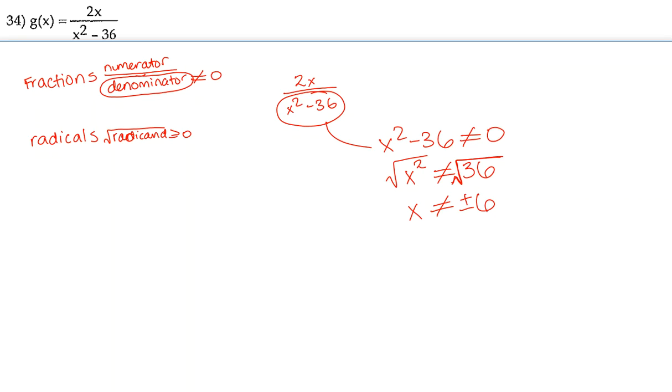So it looks like x can be anything it wants except negative 6 and positive 6. And in order to write that in set notation, we're going to write, for all x, x cannot equal negative 6 or positive 6.